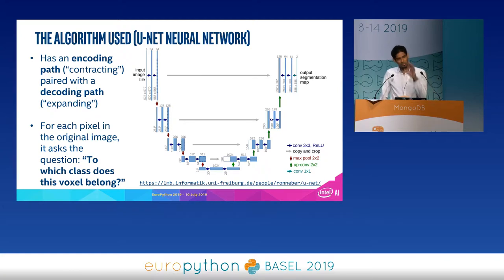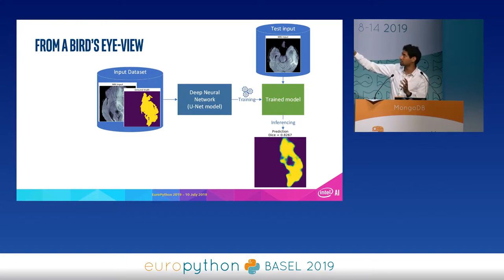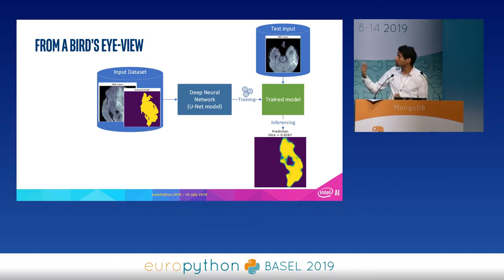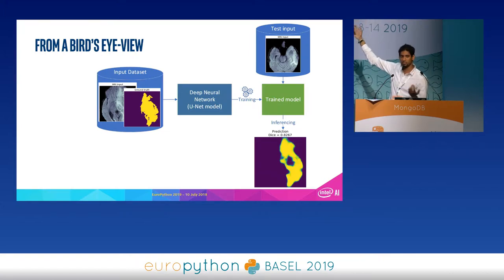If you look at the bird's-eye picture of this whole algorithm, it looks like this — very simple. We have an input dataset of labeled data going into the neural network. The next step is to train that neural network. Once we have that, we have a trained model. Then a new patient comes in, we do inferencing, and we get the result.